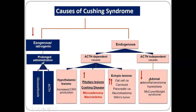The ACTH-independent cause involves the adrenal gland directly, with no involvement of the pituitary or hypothalamus. These include adenoma and carcinoma of the adrenal gland, and McCune-Albright syndrome. In these conditions, ACTH levels are low because excess cortisol suppresses ACTH through negative feedback. ACTH levels are therefore very important for differentiating these causes.